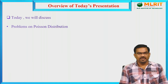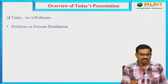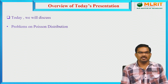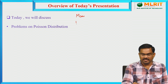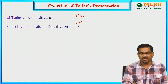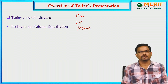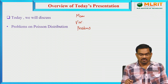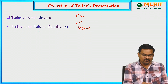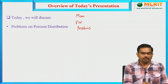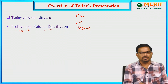In the last session, we introduced Poisson Distribution and derived the formula for mean and variance of Poisson Distribution, and we solved some problems on Poisson Distribution. In today's presentation, I would like to solve some more problems on Poisson Distribution.